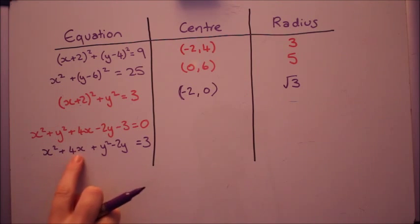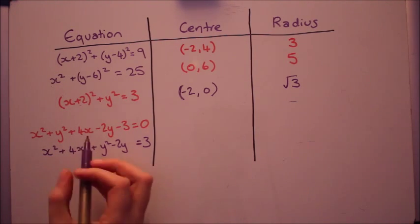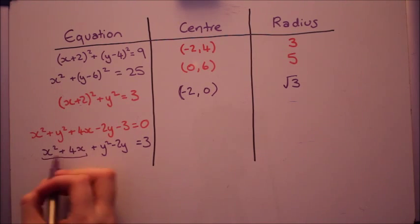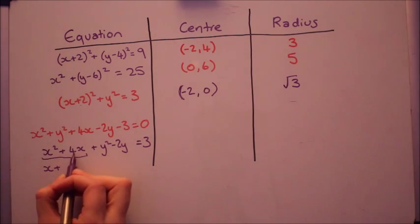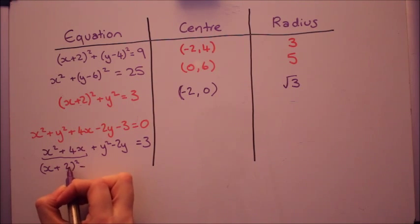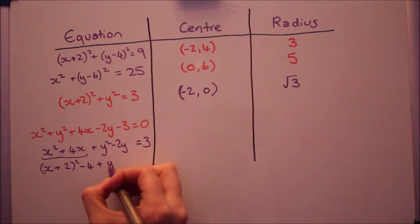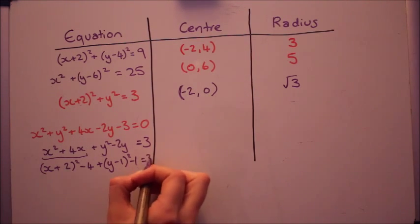First of all, I've just written the x bits together and the y bits together and put the three on the other side. Now I'm going to complete the square for the x's. So that will be, halving that number, it'll be 2. And I need to take off that number squared. Now I'm going to do the same for the y's.